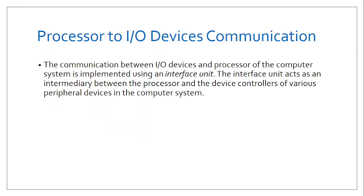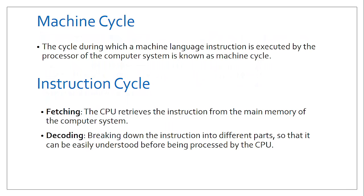The control unit sits at the center of the I/O communication with the processor. It controls instructions from input devices and ensures they are displayed or stored in the right output devices. As the processor handles instructions it goes through a full cycle called the fetch-execute cycle. Before that, we need to understand that the computer doesn't understand the characters we type, so it must convert them into machine language.